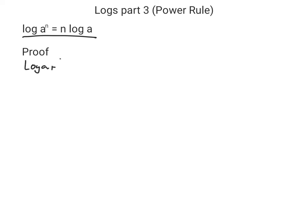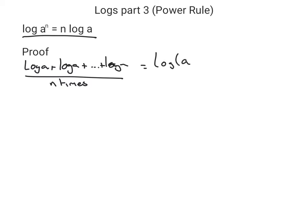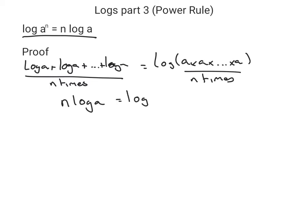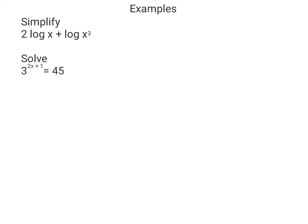If we have log of a plus log of a plus dot dot dot log of a, n times, that's equal to — using the addition rule from a previous video — log of a times a times a, n times. Log of a added n times is n lots of log a, and a times a times a, n times, is a to the n. So you can see that's quite a simple proof.